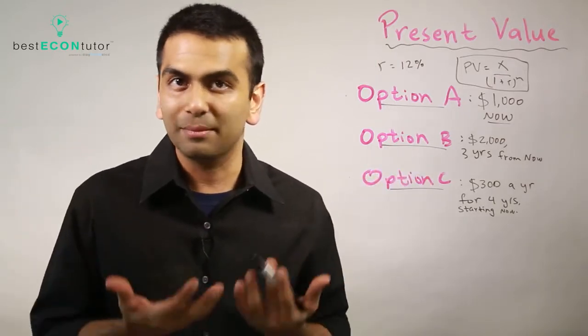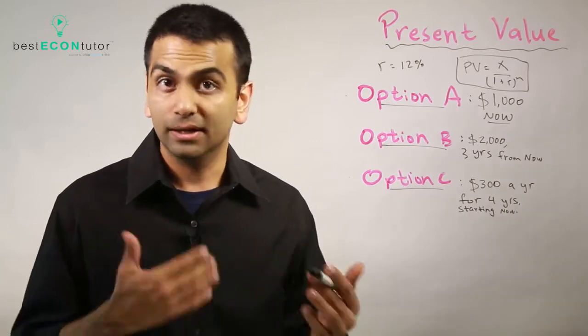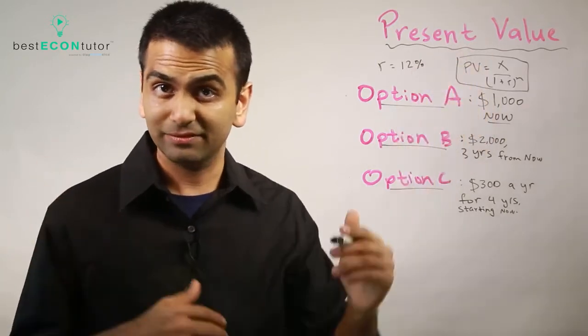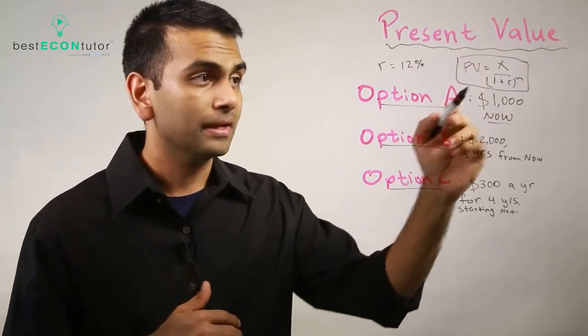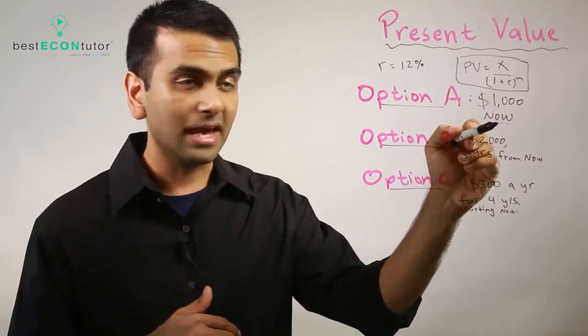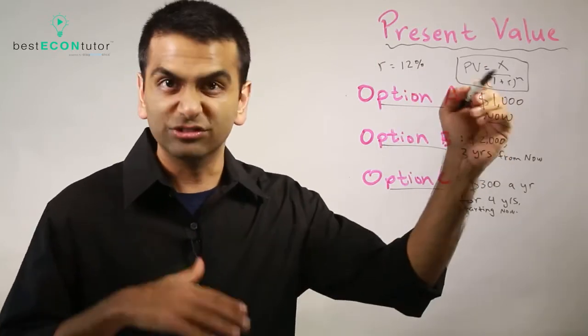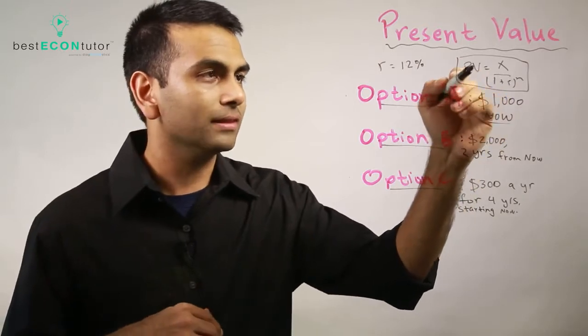Well the one given to you 30 years from now is really not worth that much to you right now. So the sooner the better, the higher the present value. It's sooner if it's a lower N. In fact, what if you were given that money right now? The N is zero, zero years from now.